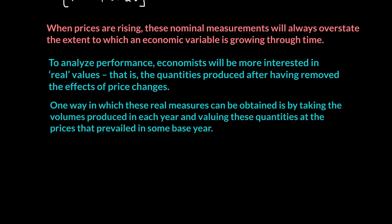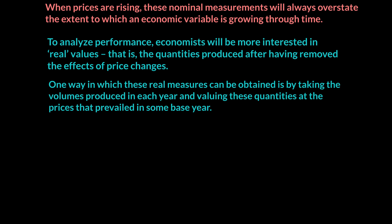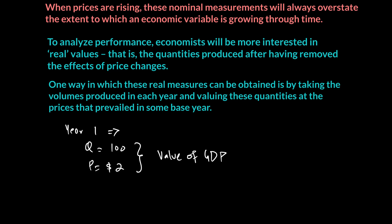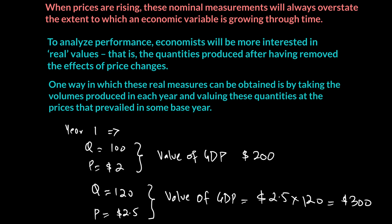Let's say an economy in year one made 100 units at a price of $2, so the value of GDP — total output — is $200. Now if the quantity changes from 100 to 120 and the price changes from $2 to $2.50, the nominal GDP would be 2.5 × 120 = $300. But that is the nominal GDP.